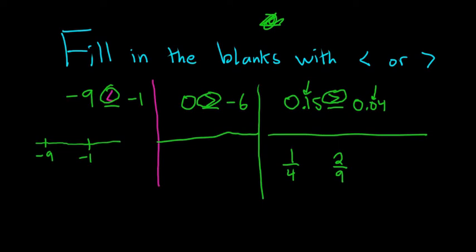So which one is bigger? There is a trick, right? What you can do is you can multiply. 4 times 2 is 8, 9 times 1 is 9, so which one is bigger? Well, 9 is bigger than 8, so 1 fourth is bigger than 2 ninths. Boom.